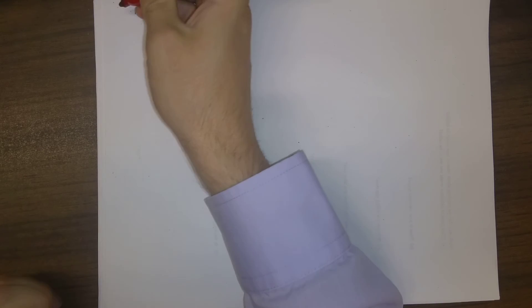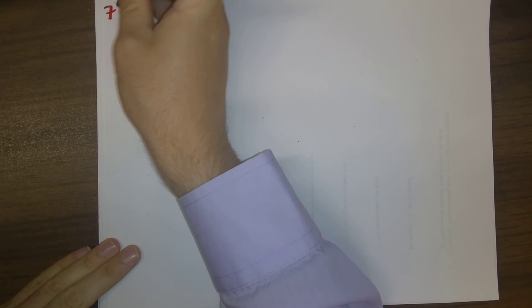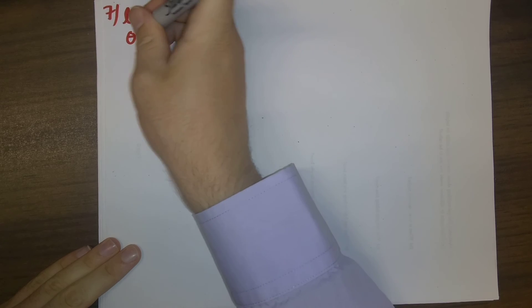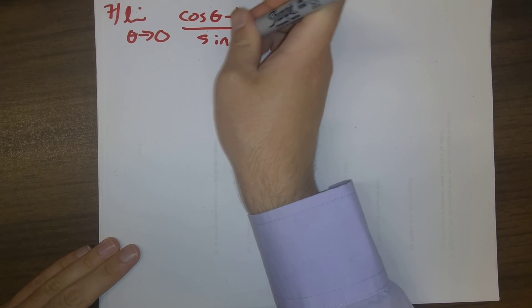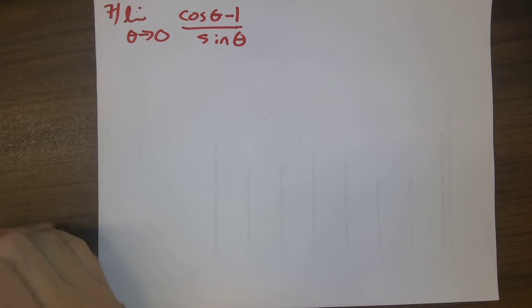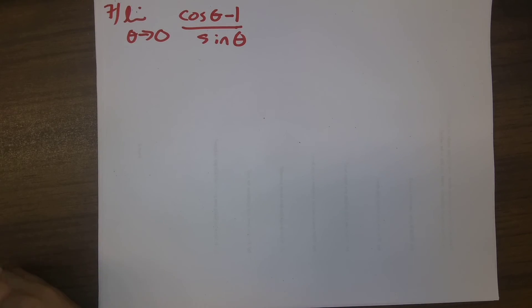So with that in mind, here is the final problem. The final problem from the worksheet was limit as theta goes to zero of cosine theta minus one over sine theta. So with what we just learned, you should be able to crunch through this problem. You might want to try this right now by yourself.